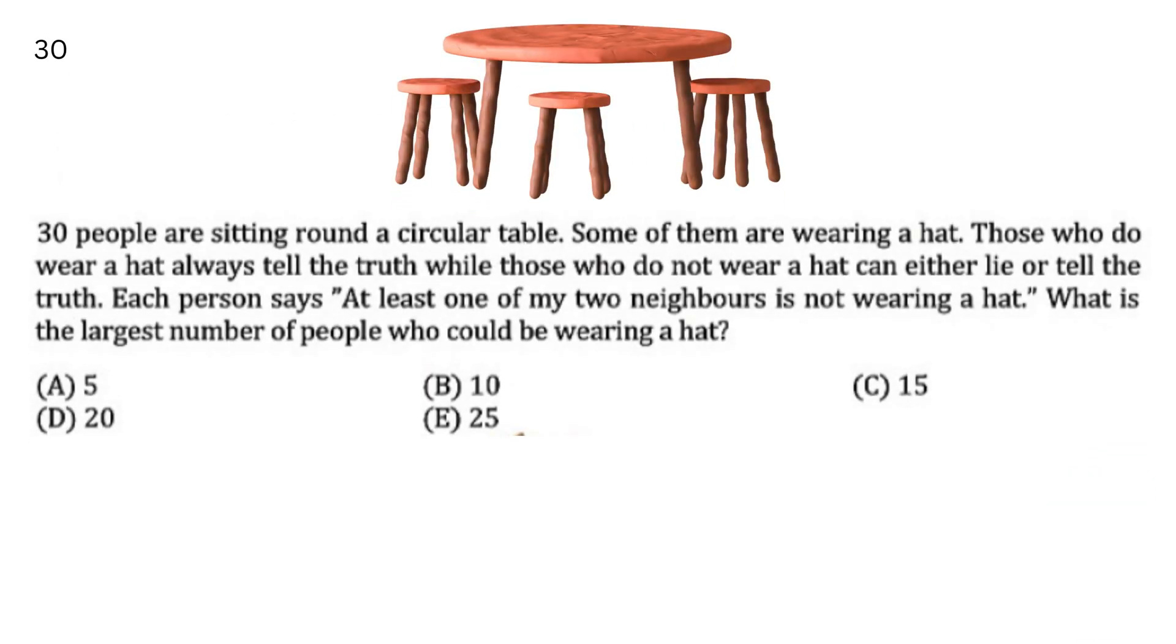30 people are sitting around a circular table. Some of them are wearing a hat. Those who do wear a hat always tell the truth, while those who do not wear a hat can either lie or tell the truth. Each person says, at least one of my two neighbors is not wearing a hat. What is the largest number of people who could be wearing a hat?